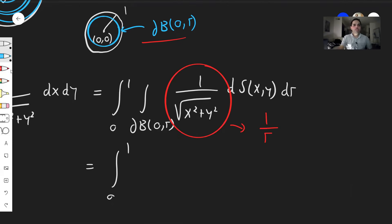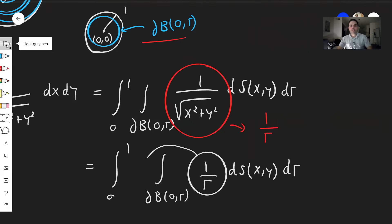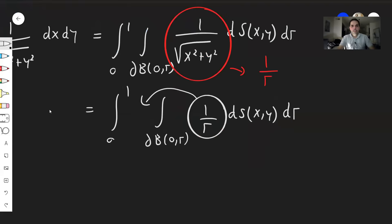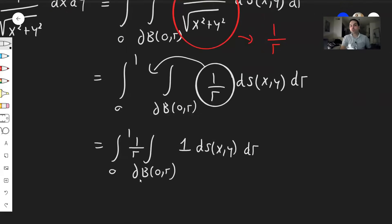So all you have to do is integrate the function 1 over r over that circle. So ds(x,y) dr. And again, the beautiful thing, this comes out. And so you're left with the integral from 0 to 1, 1 over r, the integral over the circle of 1, ds(x,y), dr.